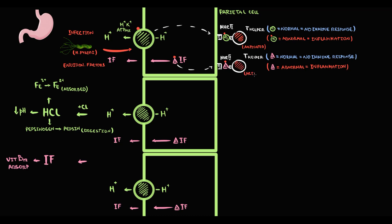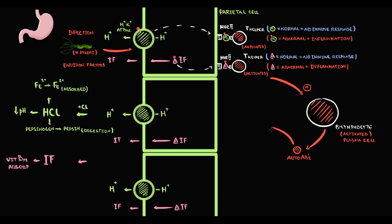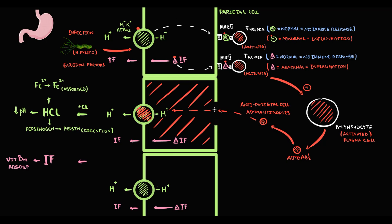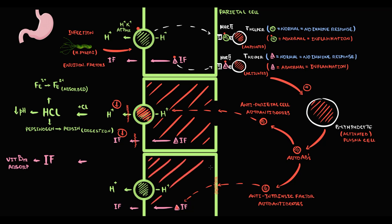When T-helpers become activated, they activate B-lymphocytes — activated B-lymphocytes are called plasma cells. Once activated, they begin to produce autoantibodies: anti-parietal cell autoantibodies that target hydrogen-potassium ATPase and parietal cells, and anti-intrinsic factor autoantibodies that target intrinsic factor together with parietal cells. Inflammation of parietal cells over time causes their death, and without parietal cells, we cannot produce hydrogen ions or intrinsic factor.